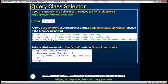jQuery class selectors use JavaScript's native getElementsByClassName function behind the scenes if the browser supports it. We have a few examples here. Notice within the first function, we are passing 'small' as the CSS class name, so this is going to find all elements with that class. The second example finds all elements with class 'small' or class 'big'. The third example finds all div elements with class 'small' and any element with class 'big'.